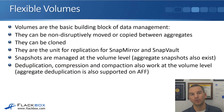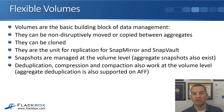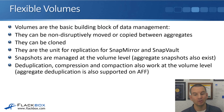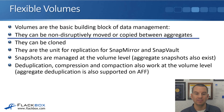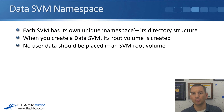Flexible volumes are the basic building block of data management — they are a big deal in ONTAP. They can be non-disruptively moved or copied between different aggregates, and they can be cloned. They are the unit of replication for SnapMirror and SnapVault. Snapshots are managed at the volume level — though aggregate-level snapshots are also supported, your day-to-day snapshots will be volume-level. Deduplication, compression, and compaction also work at the volume level. A newer feature is aggregate deduplication, supported on AFF systems.